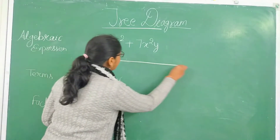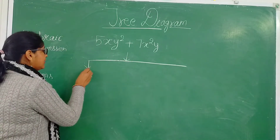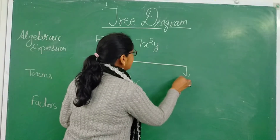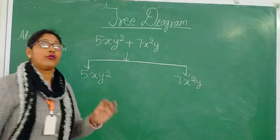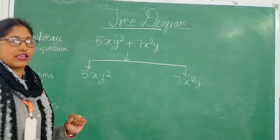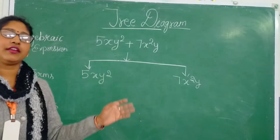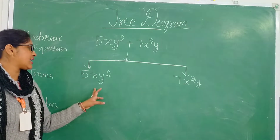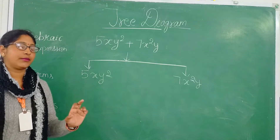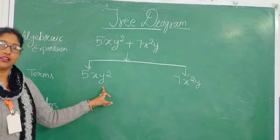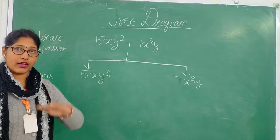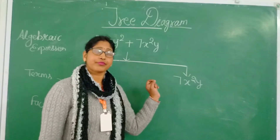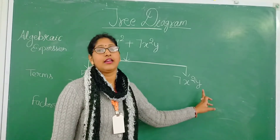So first we draw a solid line — our first term is 5xy² and our second term is 7x²y. Now we have to write the factors of each term. Factors are the variables and constants by which these terms are formed. The term 5xy² is formed by the product of 5, x, and y², where y² means y multiplied by y. Similarly, 7x²y is formed by 7, x, x, and y.